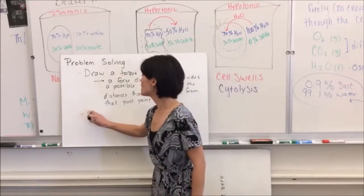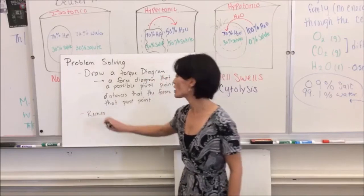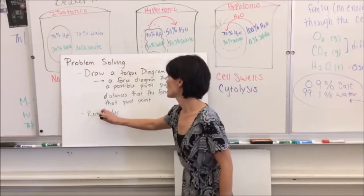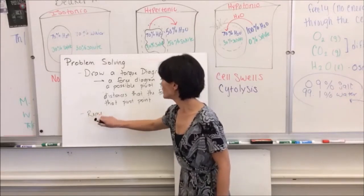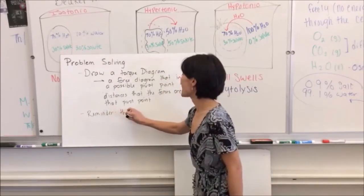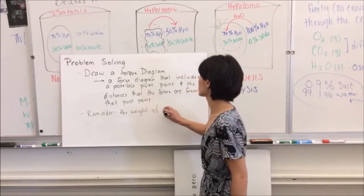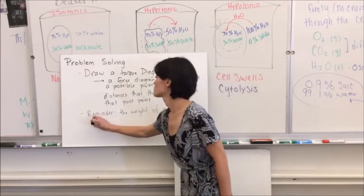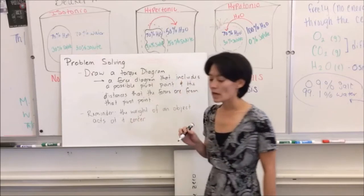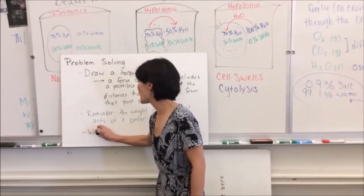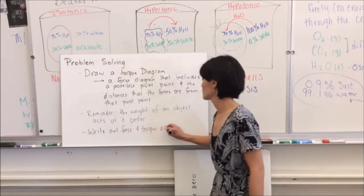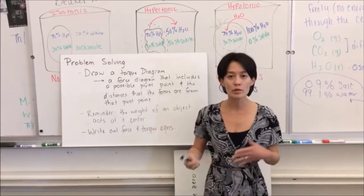A torque diagram is a force diagram that includes a possible pivot point and distances from forces to that pivot point. Another thing to remember is that the weight of an object acts from its center of mass. And then the last thing you need to know is that you're going to write out your force and your torque equations, and we're going to see if we have any common variables that we're trying to look for and do some substitution.